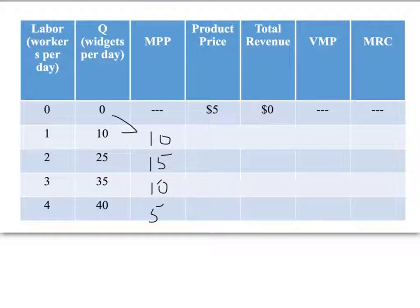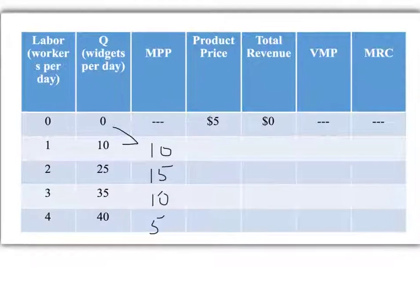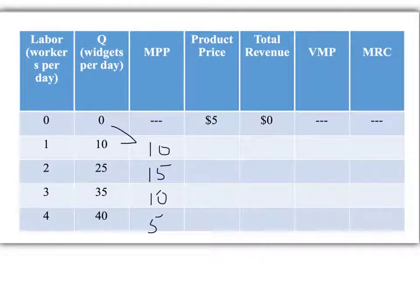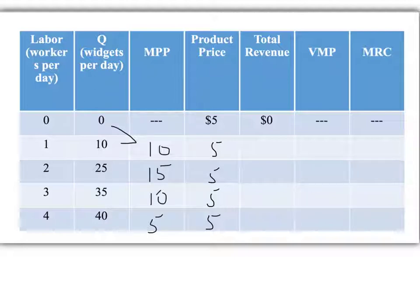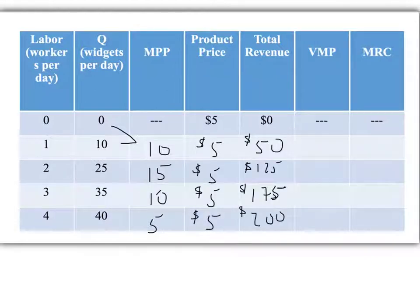Looking at product price, we're not going to discriminate, so the product price is always simply $5. Total revenue equals price times quantity — it's how much money the company gains in total from selling the quantity per day.